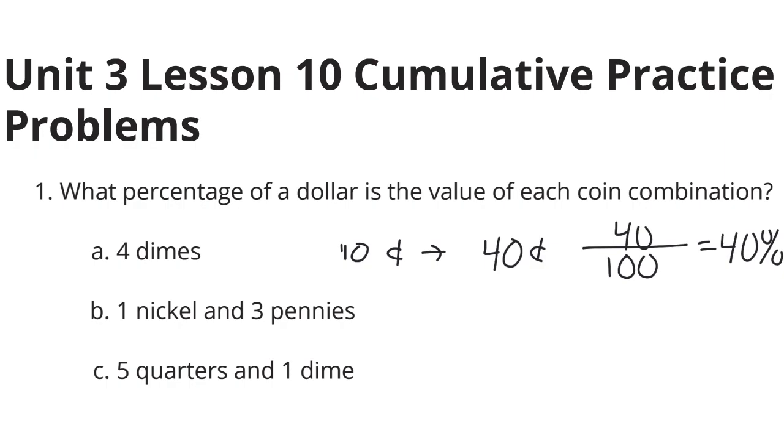One nickel and three pennies. Well, we're looking at 5 cents for the nickel, 3 cents for the pennies, which is going to be 8 cents out of the 100, which is going to be 8%.